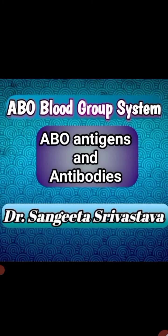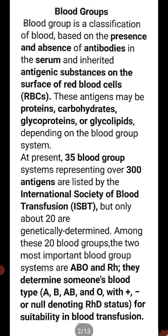Welcome students. Today we will talk about a very important and interesting topic: blood groups. We will discuss antigens and antibodies of the ABO blood group system. Blood group is a classification of blood based on the presence and absence of antibodies in the serum and inherited antigenic substances on the surface of red blood cells.